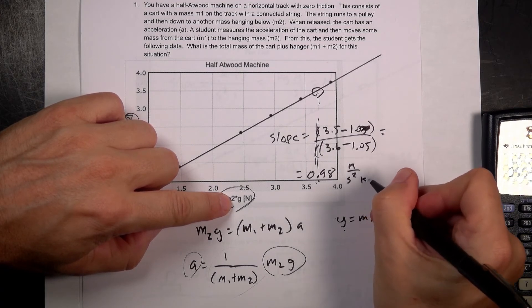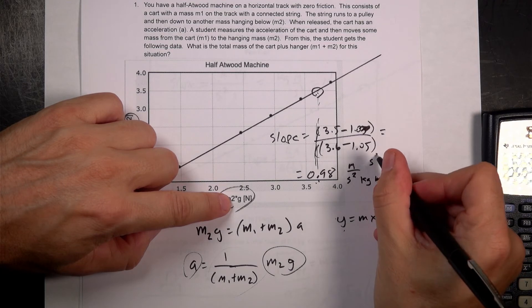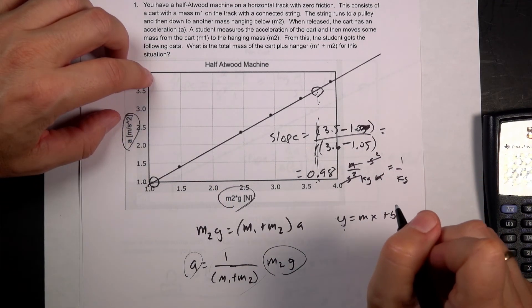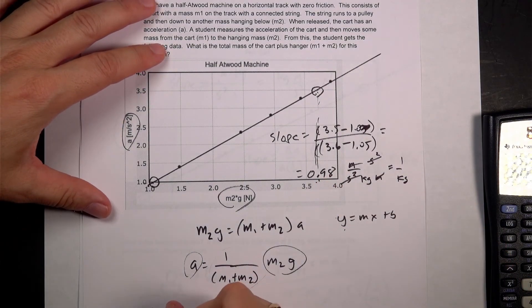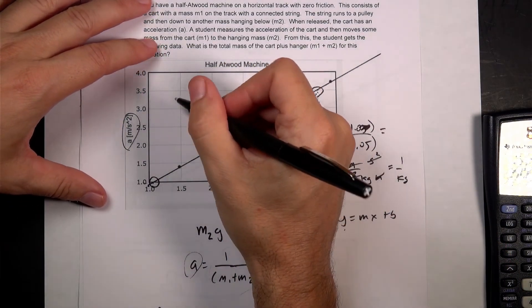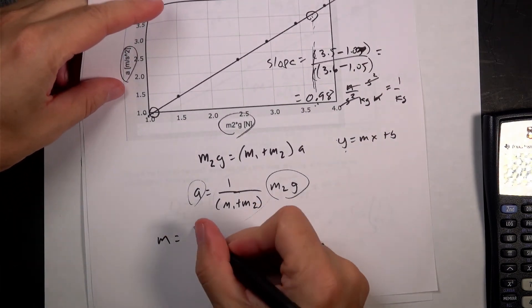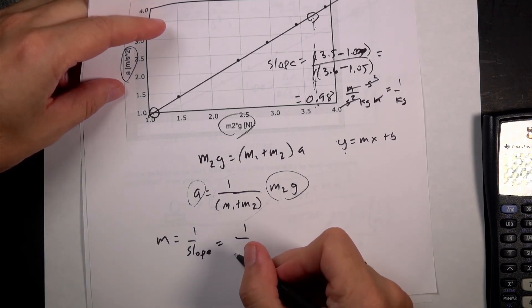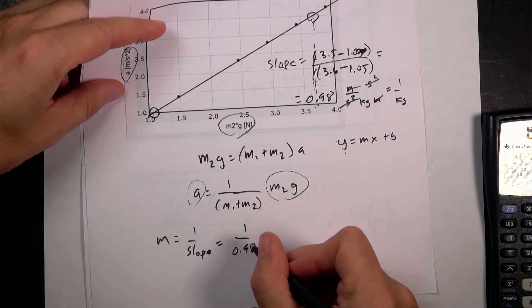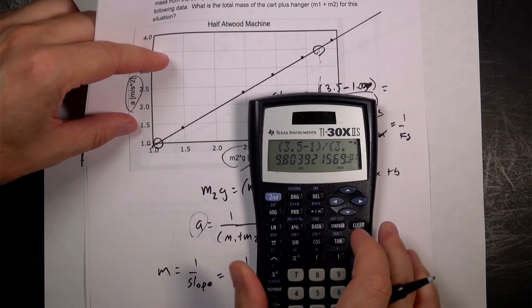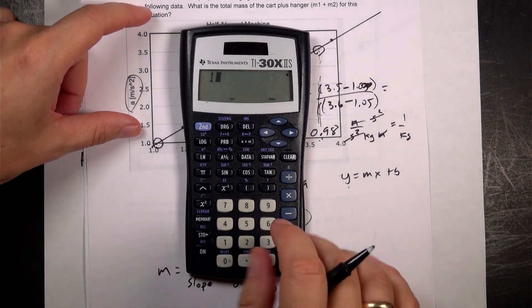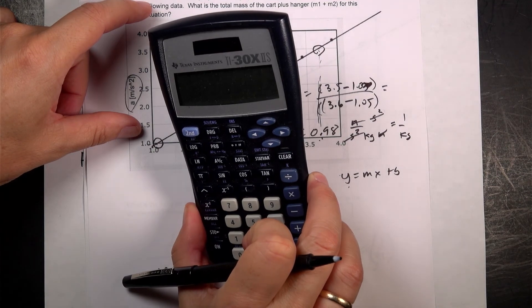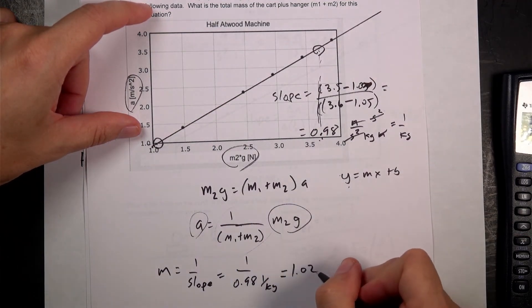Which tells me that's not the mass. So the mass is going to be 1 over the slope, and so it's going to be 1 over 0.98, 1 over kilograms. So let's put that 1 divided by 0.98 equals, and I get 1.02 kilograms.